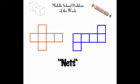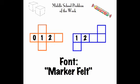And for extra credit, try to figure out how many different nets you can make for a cube. Then we started — we put 0, 1, and 2 on one cube, and just 1 and 2 on the other. And since we're supposed to be using a magic marker, our font this week is Marker Felt.